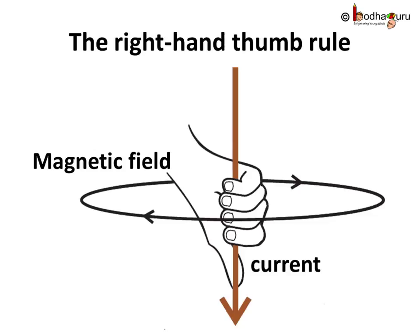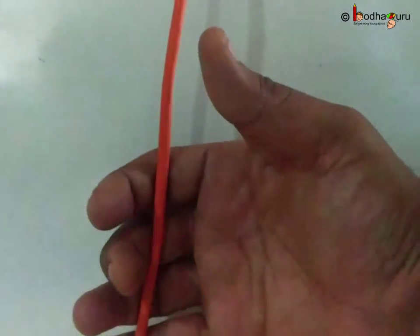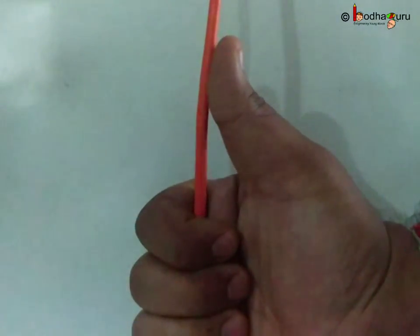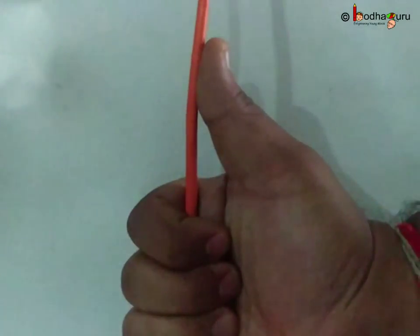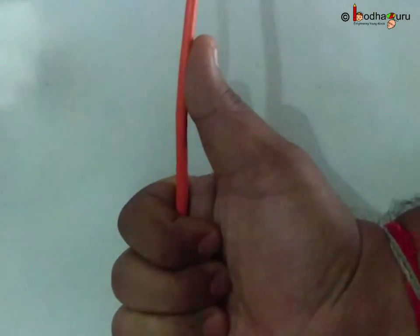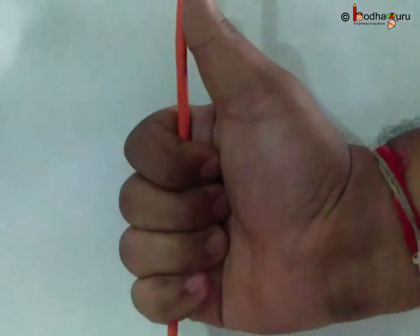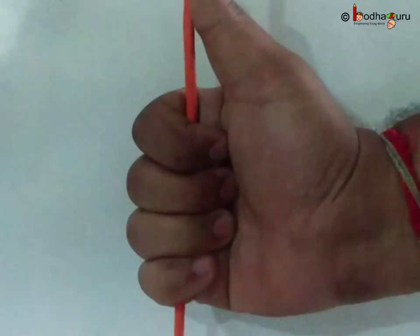For this, imagine that you are holding a current carrying straight conductor with your right hand such that the thumb points towards the direction of current. Then your fingers will wrap around the conductor in the direction of field lines of the magnetic field.